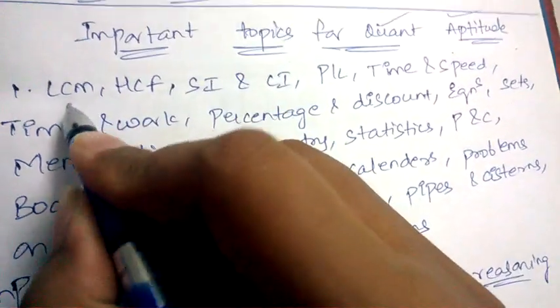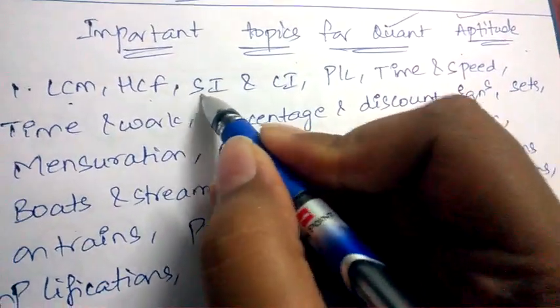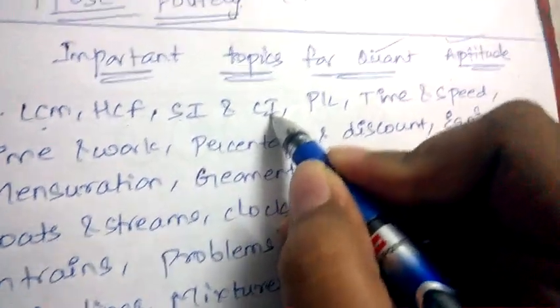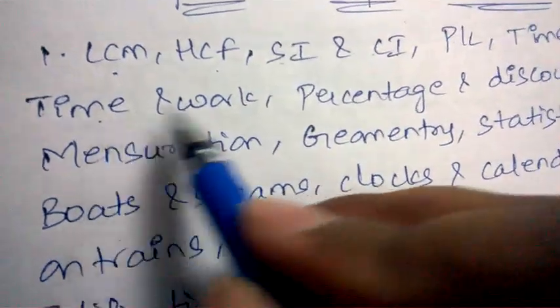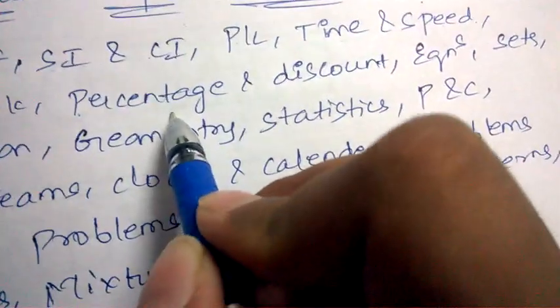The first most important topics are LCM, HCF, simple interest and compound interest, profit and loss, time and speed, time and work, and percentage.